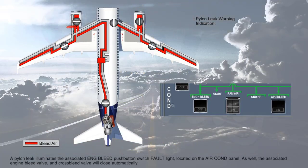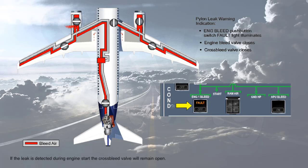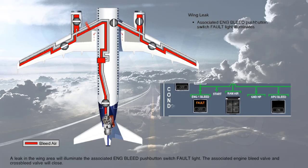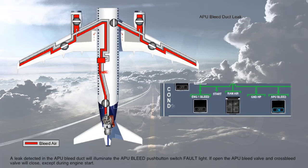A pylon leak illuminates the associated engine bleed push-button switch fault light on the air conditioning panel. The associated engine bleed valve and cross-bleed valve will close automatically. If the leak is detected during engine start, the cross-bleed valve will remain open. A leak in the wing area will illuminate the associated engine bleed push-button switch fault light; the associated engine bleed valve and cross-bleed valve will close. If the leak is detected in the left wing, the APU bleed valve will close except during engine start. A leak detected in the APU bleed duct will illuminate the APU bleed push-button switch fault light. If open, the APU bleed valve and cross-bleed valve will close except during engine start.